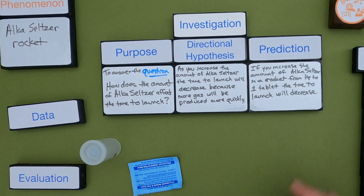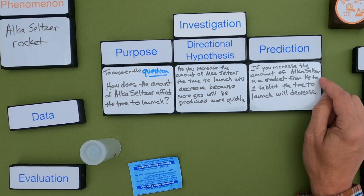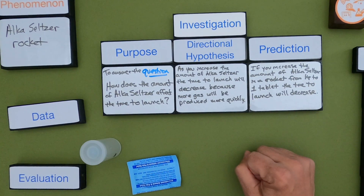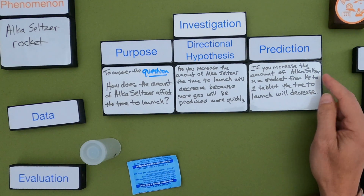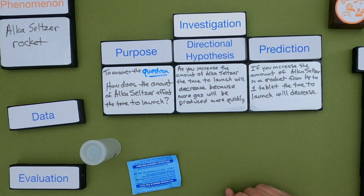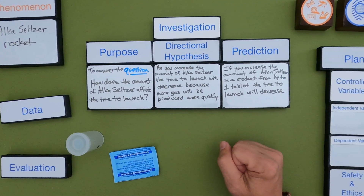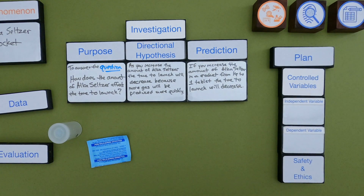For the prediction: if you increase the amount of Alka-Seltzer in a rocket from one-eighth of a tablet to one tablet, the time to launch will decrease. Since with one-quarter of a tablet it took 20 seconds, I want to think on either side of that — how much do I want to add, because I don't want to waste a lot of tablets. Before I get to the plan, I really want to think about variables, so let me write down all the variables that might change in this experiment.